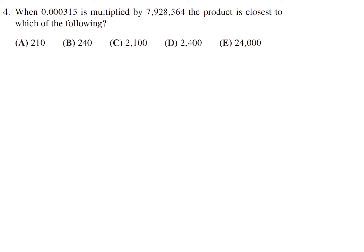When 0.00315 is multiplied by 7,928,564, the product is closest to which of the following? Well, you have a couple choices. You can either do that multiplication, but you're not allowed to use a calculator, so let's just approximate. Say 3 times 8 million, because they're just asking for an approximation, and that's of course 24 million. But we don't have 3 and 8 million. 8 million is a pretty decent approximation of that.